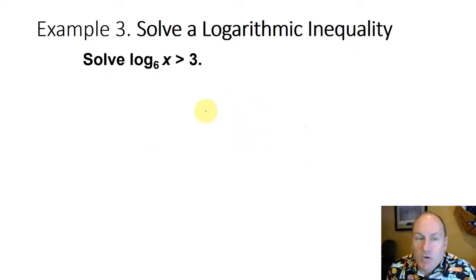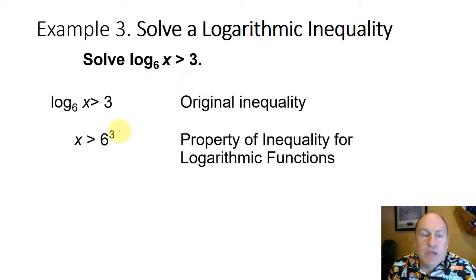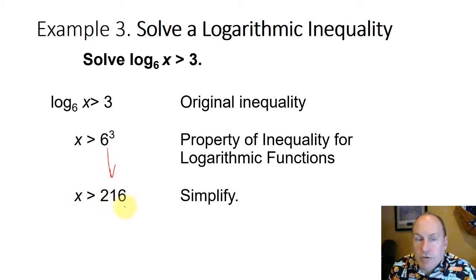Let's solve a logarithmic inequality. Solving the log base 6 of x is greater than 3. Our base is 6. Using the property of inequality for logarithmic functions, that tells us that x must be greater than 6 to the 3rd. That's really just rewriting in exponential form. So simplifying 6 to the 3rd is 216. x must be greater than 216 for this inequality to be true.